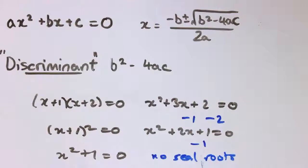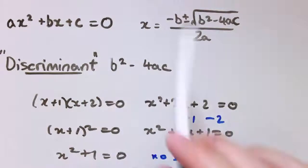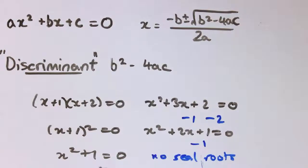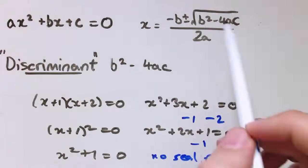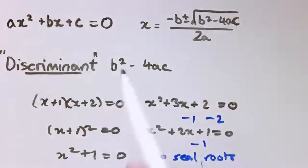So the point of the discriminant is, can we distinguish between these three cases? Because when you use the formula, what sometimes goes wrong, like in the case here where there are no real roots, is this thing inside the square root, the discriminant, is negative, and so we can't work it out.